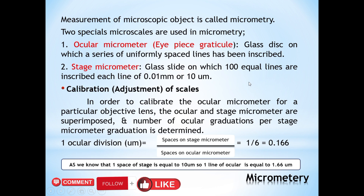The stage micrometer is placed on the stage of the microscope. It is a glass slide on which 100 equal lines are inscribed, with each line spacing equal to 0.01 mm or 10 micrometers. An important method for calculation is calibration, which is the adjustment of scale.